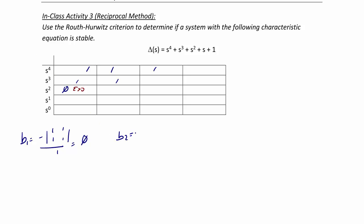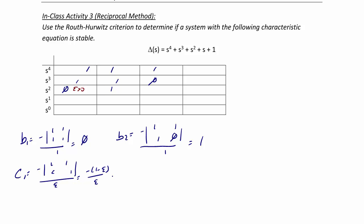Now we find B2. B2 is equal to negative 1 times 0 minus 1 times 1, divided by 1, and that equals 1, so we put a 1 here. Now we find C1. C1 is equal to negative 1 times 1 minus epsilon times 1, divided by epsilon, which is negative 1 minus epsilon over epsilon, or 1 minus 1 over epsilon. C2 is equal to negative 1 times 0 minus epsilon times 0, divided by epsilon, so that equals 0.